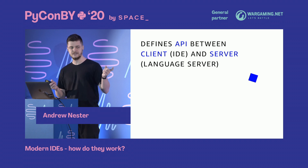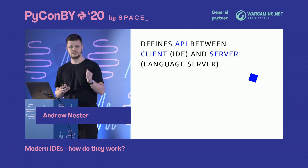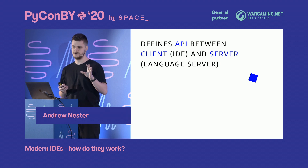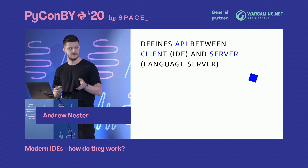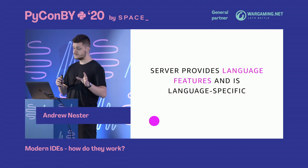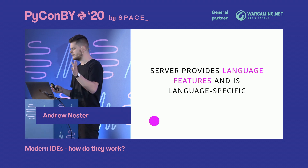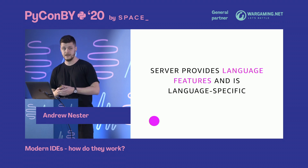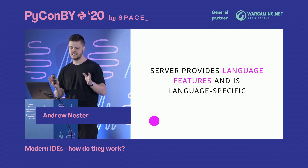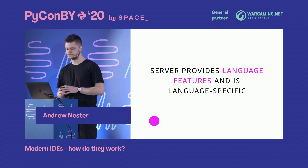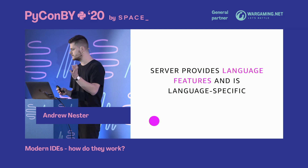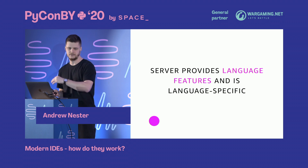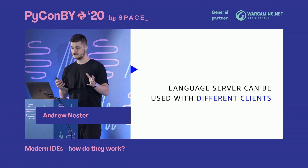This protocol defines an API between a client and a server. The client is the IDE — it can be any IDE, not just VS Code. The server is called a language server, and it provides all your fancy language features: code completions, signature help, definitions, and much more. It is language-specific — one server for Python, one for Haskell, one for Java or JavaScript, and so on.